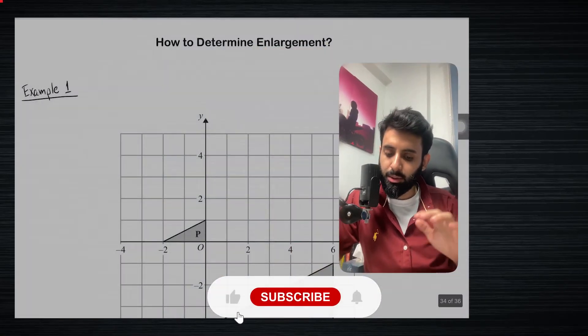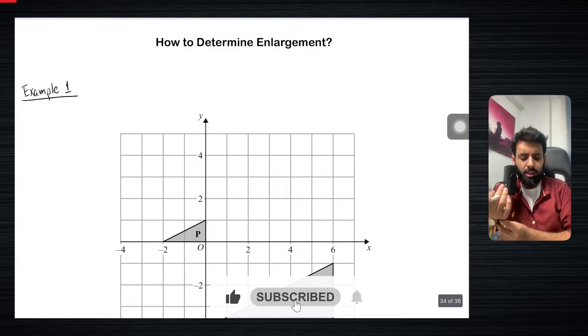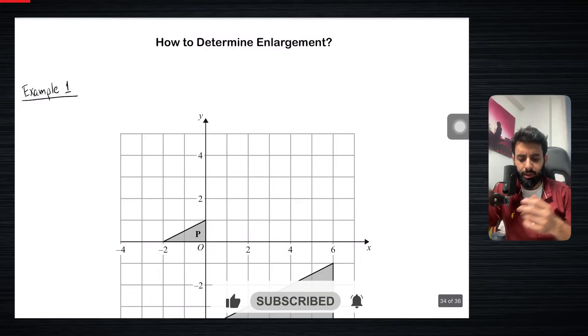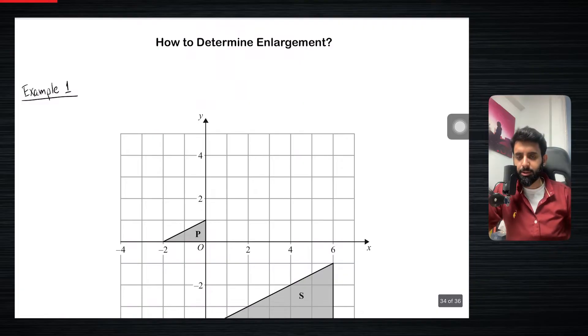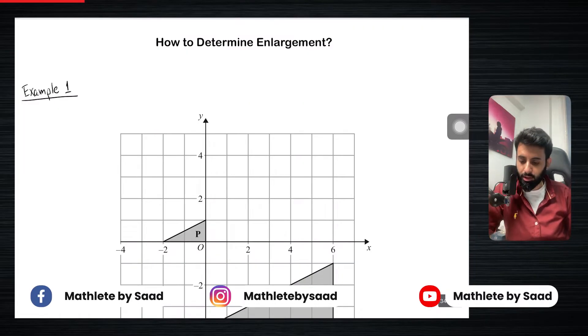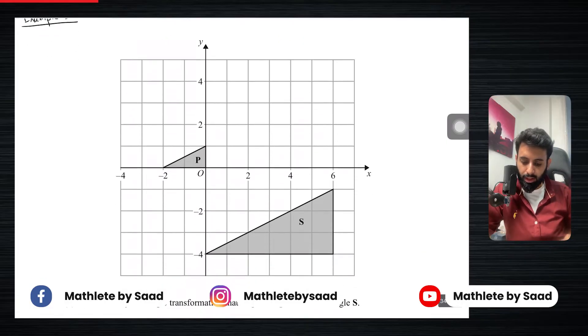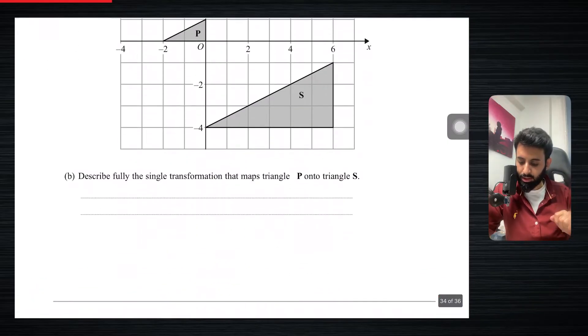So here we finally have the video that I've been talking about, that is how to determine enlargement, which basically means how to find the center of the enlargement and how to determine the scale factor. Enlargement is defined by two things: one is the center and number two is the scale factor. So here we have a question. Let's see what the question says: describe fully the single transformation that maps triangle P onto triangle S.